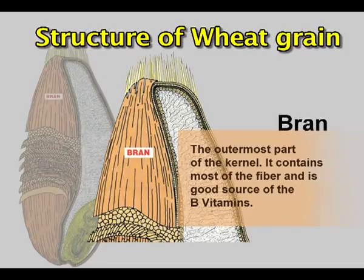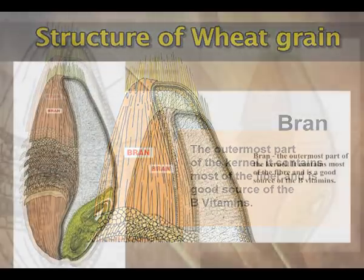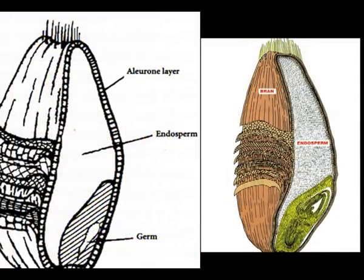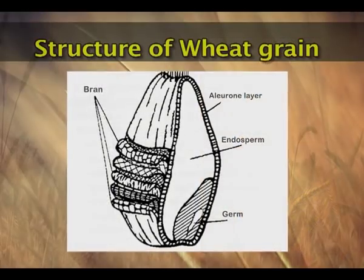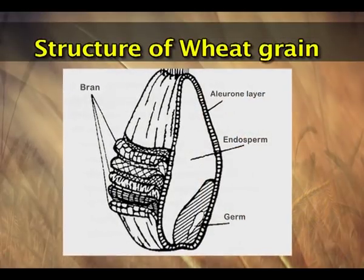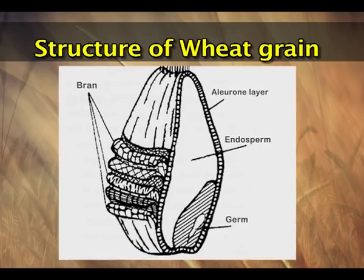This removal is actually a loss because the bran or pericarp is rich in B vitamins. Inside the bran or pericarp is the endosperm, which is surrounded by one or more layers of cells known as the aleurone layer. In wheat, the aleurone layer consists of thin-walled cubical cells and this constitutes 7% of the grain weight.